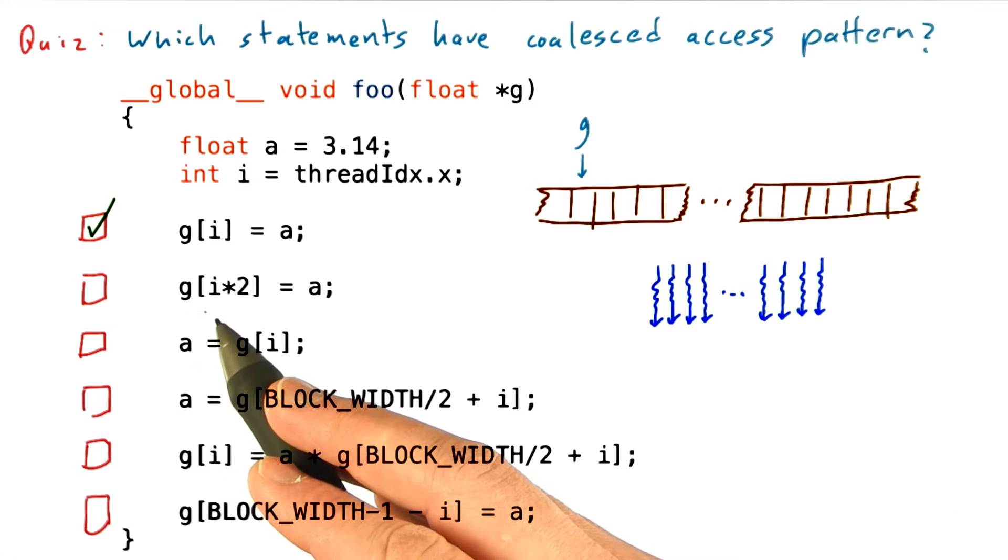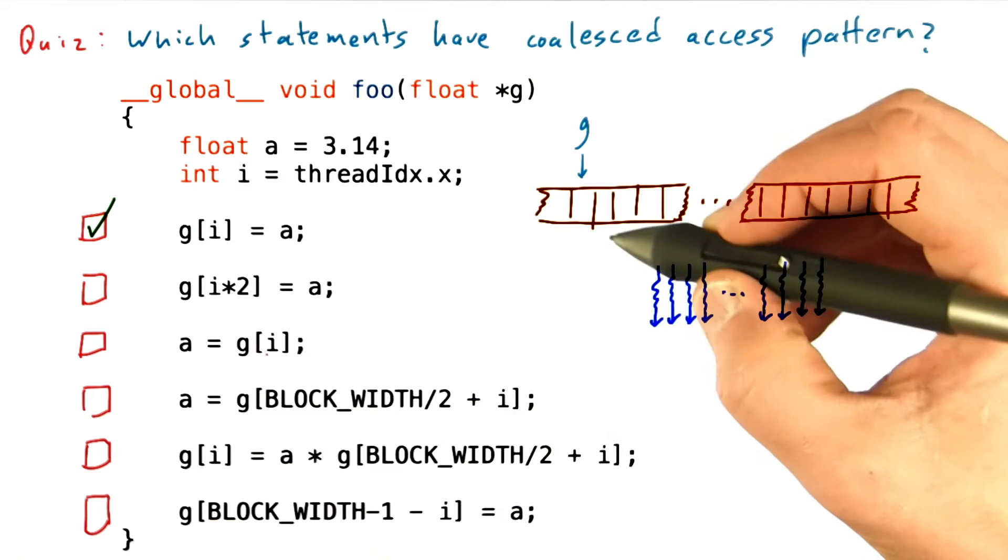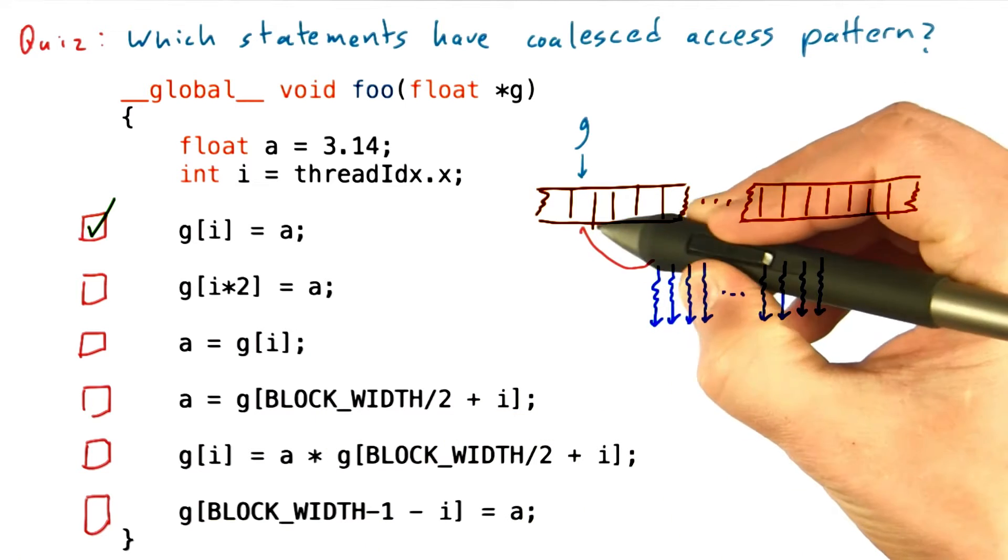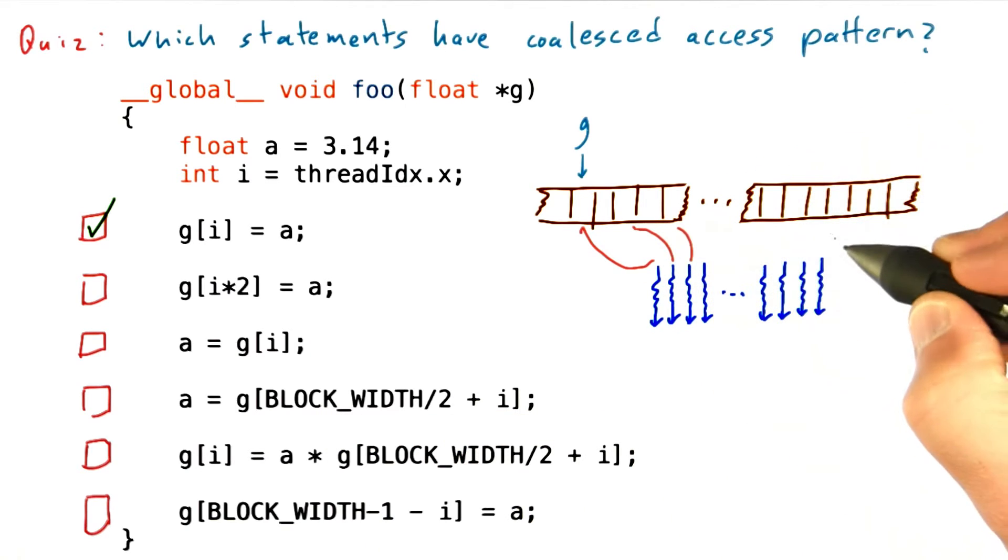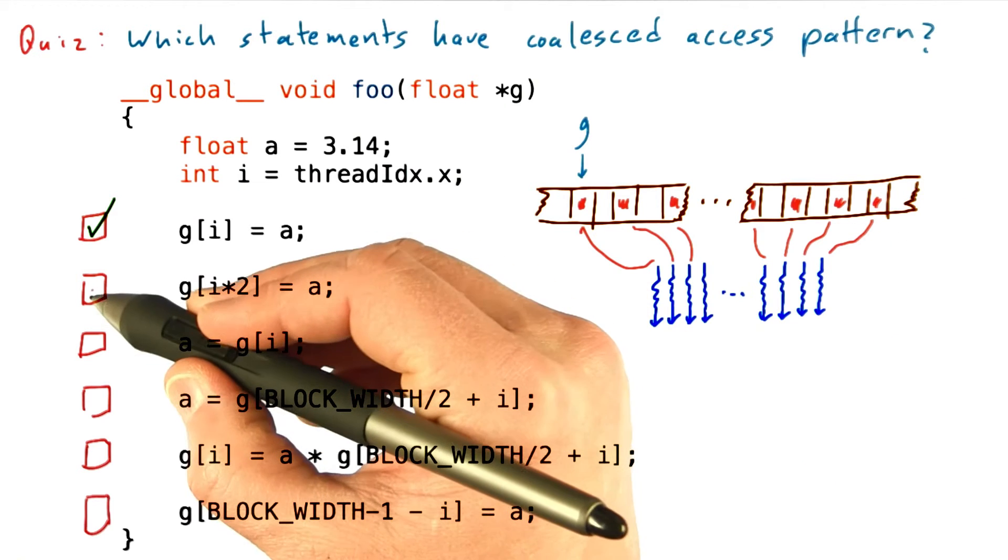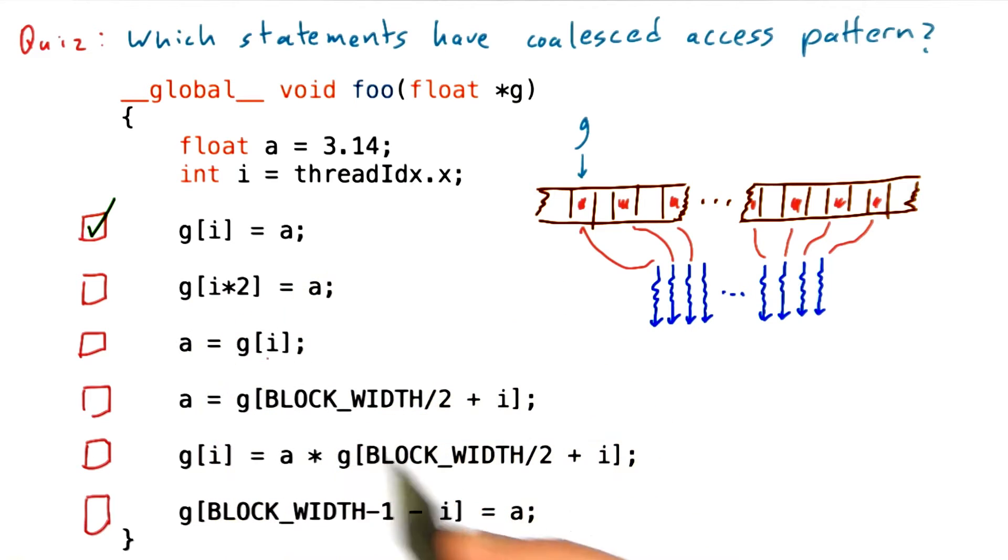In this case, every thread is accessing a location in memory defined by its index times 2. And so there's going to be a strided access here. Threads are going to end up reading every other location in memory. So this is the access pattern we've called strided. It's not coalesced.